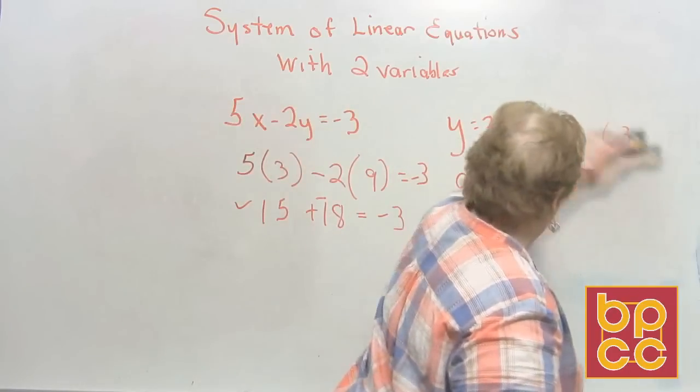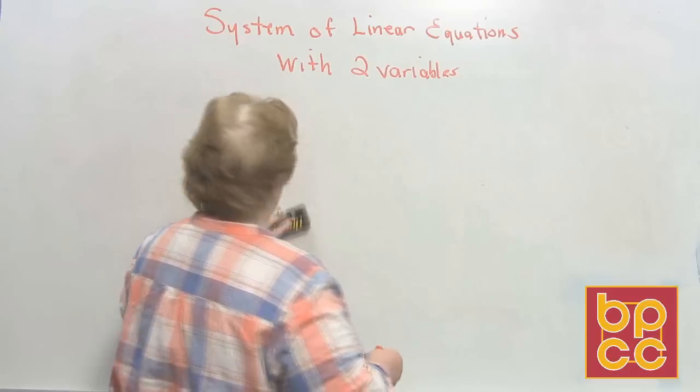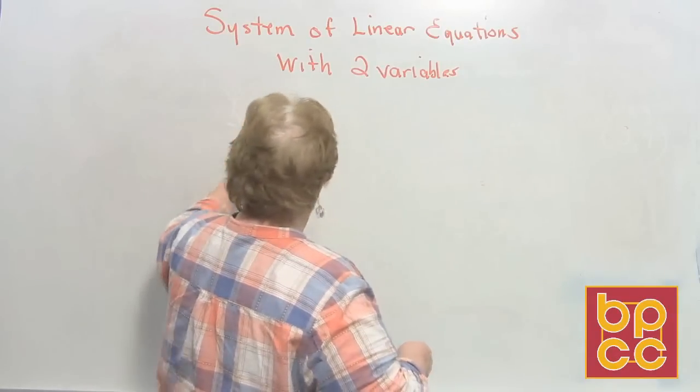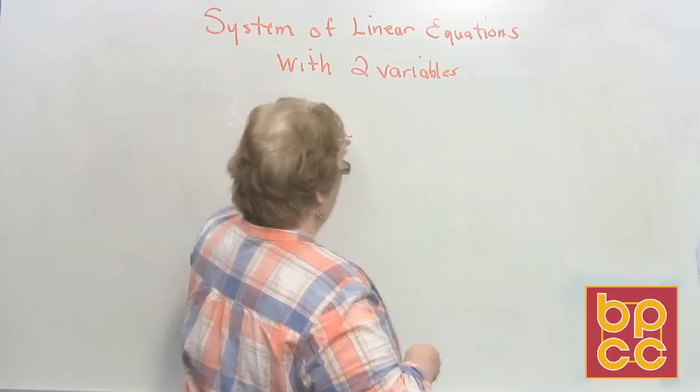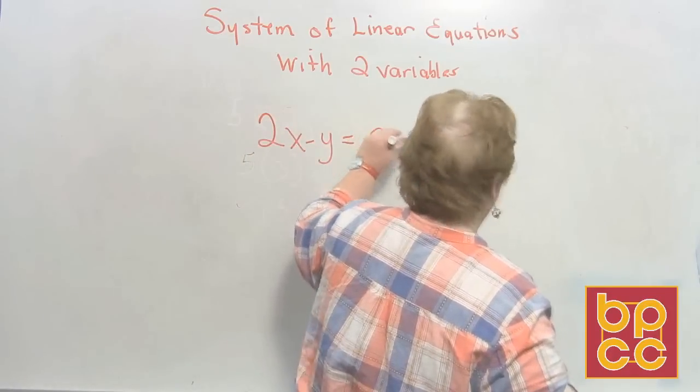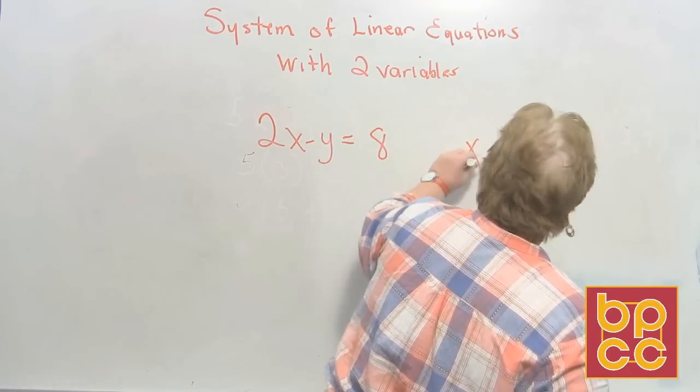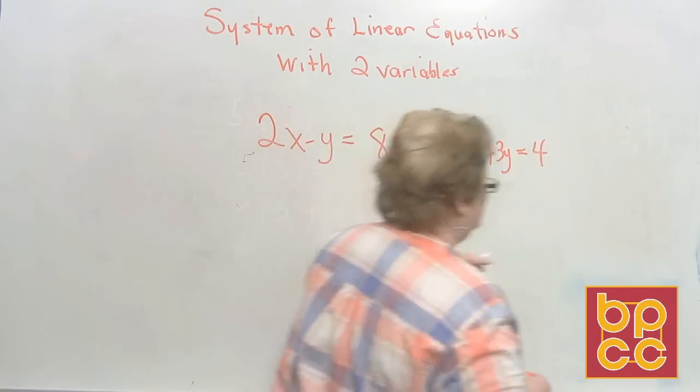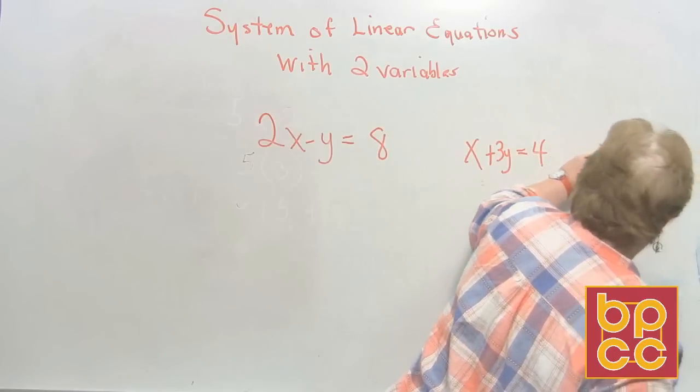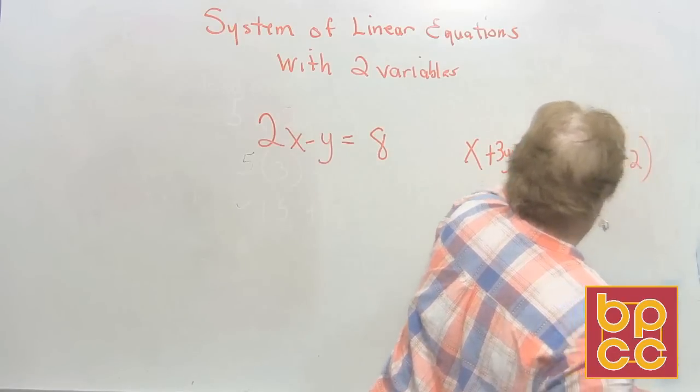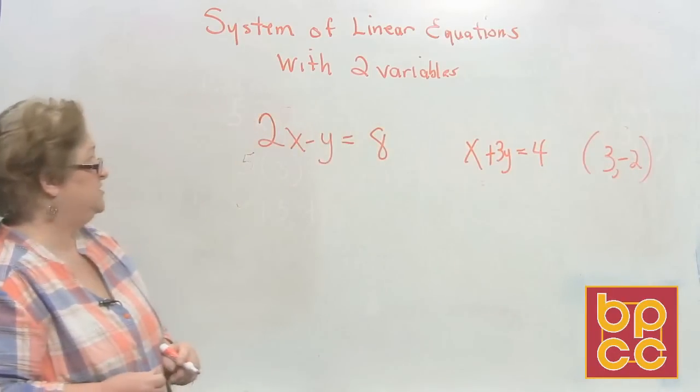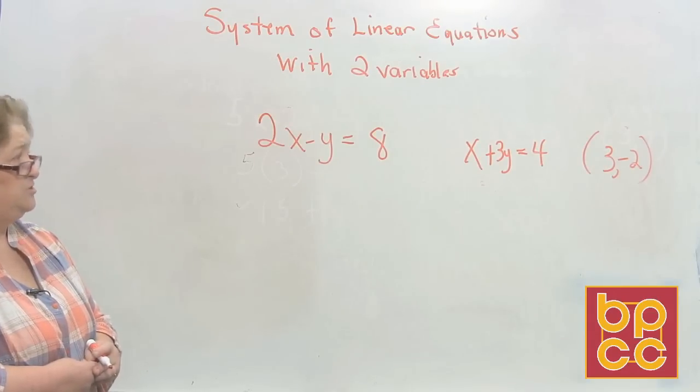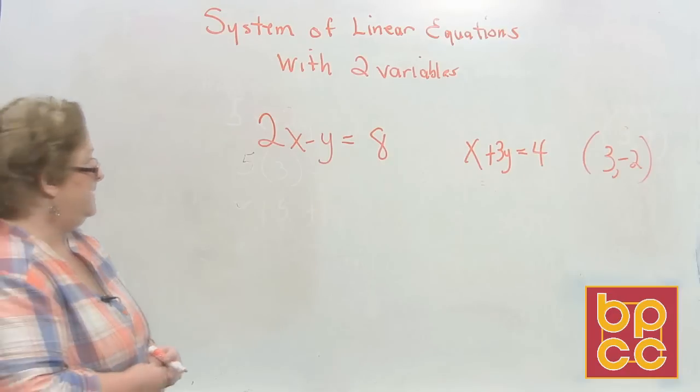Now let's try another one. This time I'd like to do 2x minus y equals 8, and x plus 3y equals 4. I would like to use 3 comma negative 2 to test and see if we will find a solution for these two linear equations.